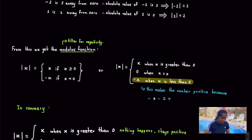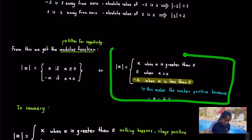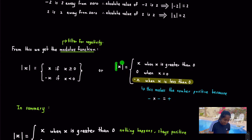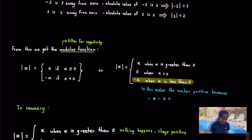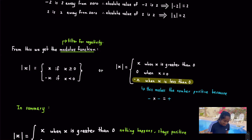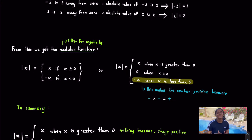A more formal way of expressing this: the modulus function is denoted by two lines. The modulus of x equals x when x is greater than 0, meaning it stays positive if it's already positive. If x equals 0, it stays 0. However, if x is less than 0, or negative, all we do is make it positive.